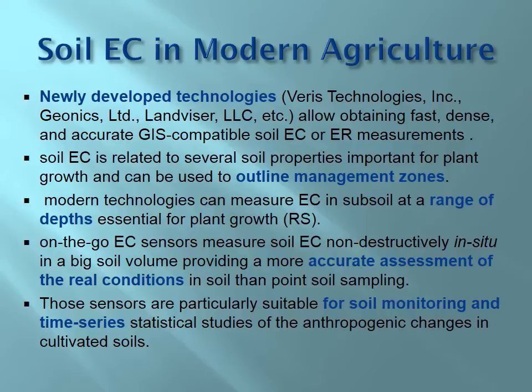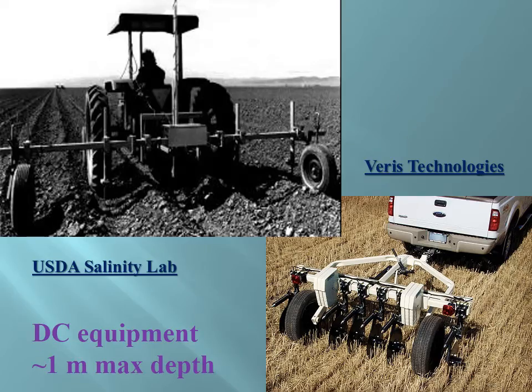EC sensors measure soil EC non-destructively and in situ, using a large soil volume, making them more accurate for understanding real soil conditions than point soil sampling. Those sensors are also very suitable for soil monitoring in time series, because we don't collect samples — we can place the array on top and measure at different times of the year, reflecting water fluxes and different changes in the soil profile.